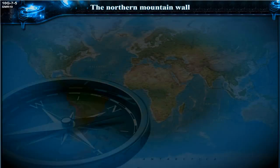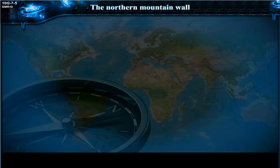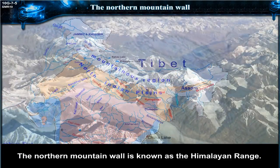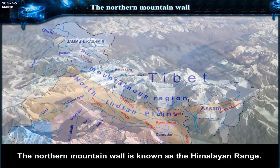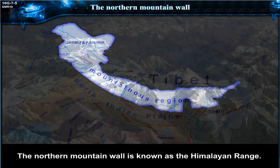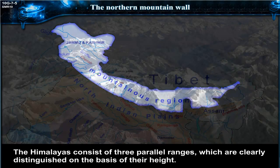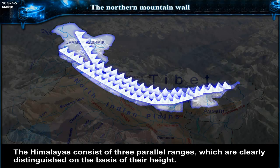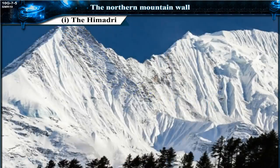The northern mountain wall — the northern mountain wall is known as the Himalayan range. The Himalayas consist of three parallel ranges, which are clearly distinguished on the basis of their height.